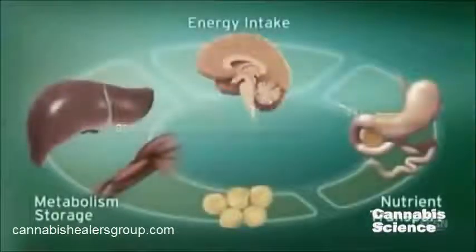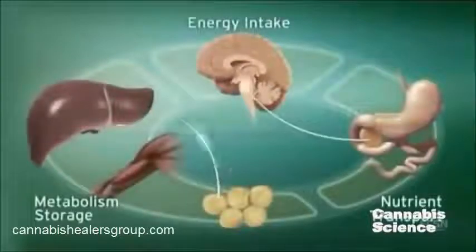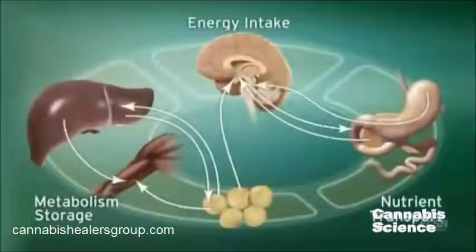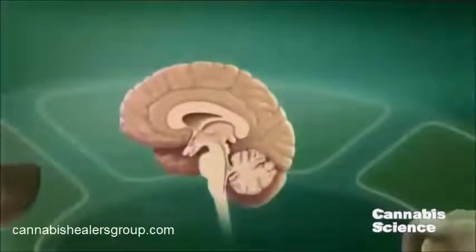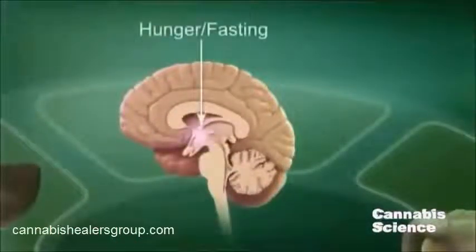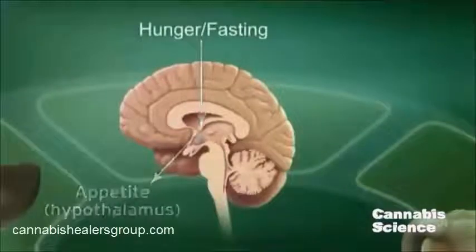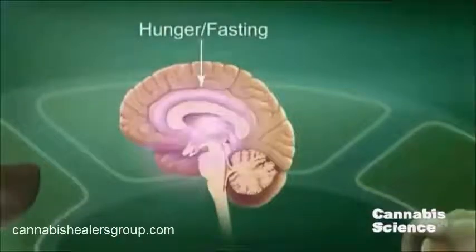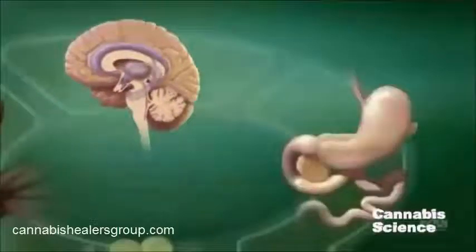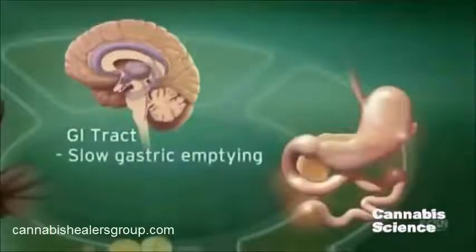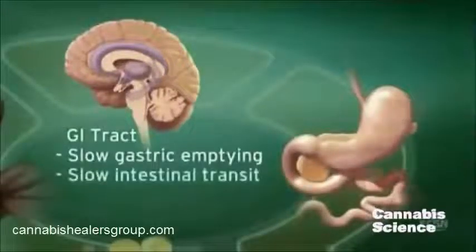Endocannabinoid system activity in the central nervous system regulates food intake. For example, ECS stimulation by hunger and fasting signals stimulates appetite and increases the palatability of food. Endocannabinoids slow gastric emptying and GI transit, and appear to stimulate secretion of ghrelin.